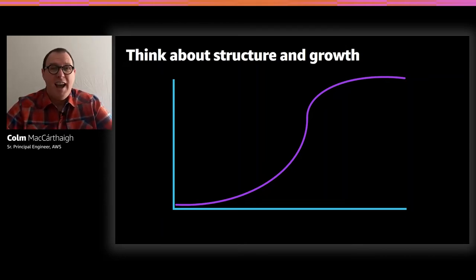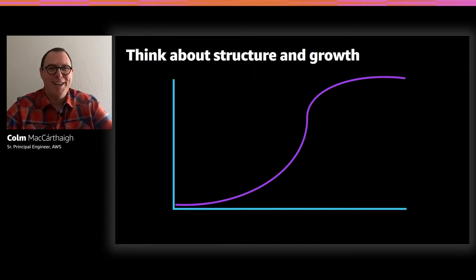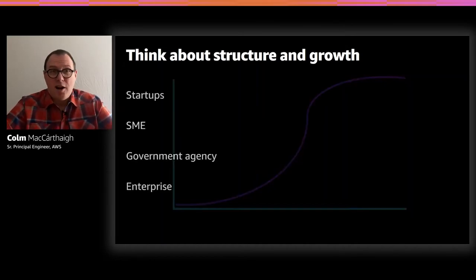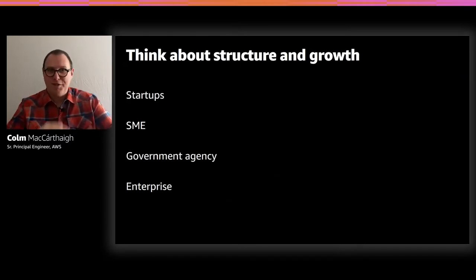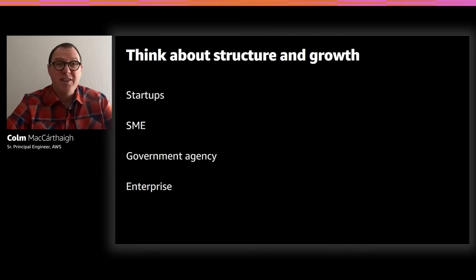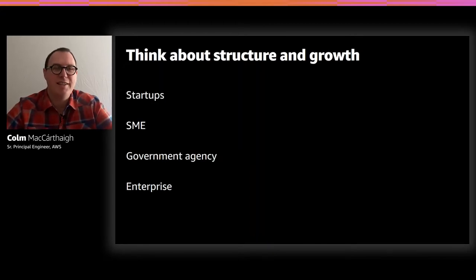The decisions people make at different points in this curve can be very different. Early on, you might decide not to optimize too much — focus on acquiring customers, get big fast, and leave optimization for later. The type of business also matters. Startups start small and grow quickly. Small and medium enterprises may have a loyal customer base growing at a very different rate. Government agencies serve citizens, whose growth follows birth rates or immigration rates — quite steady and modest compared to technology adoption curves.